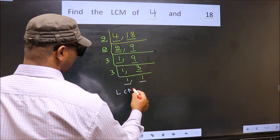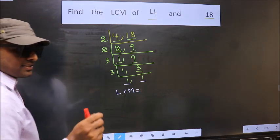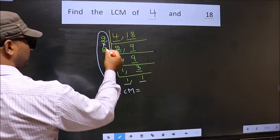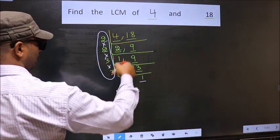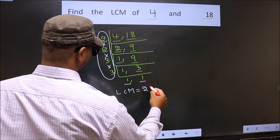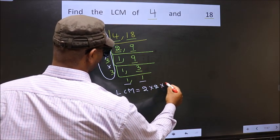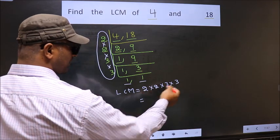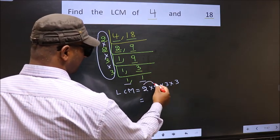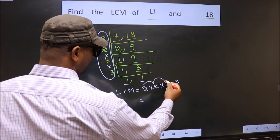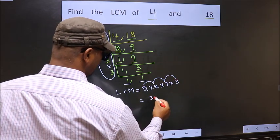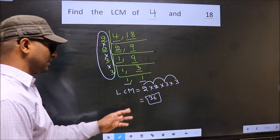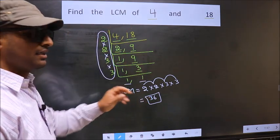We got 1 in both places. So our LCM is the product of these numbers. That is 2 times 2 times 3 times 3. So let us multiply these numbers: 2 times 2 is 4, 4 times 3 is 12, 12 times 3 is 36. So this is our LCM: 36. Am I clear?